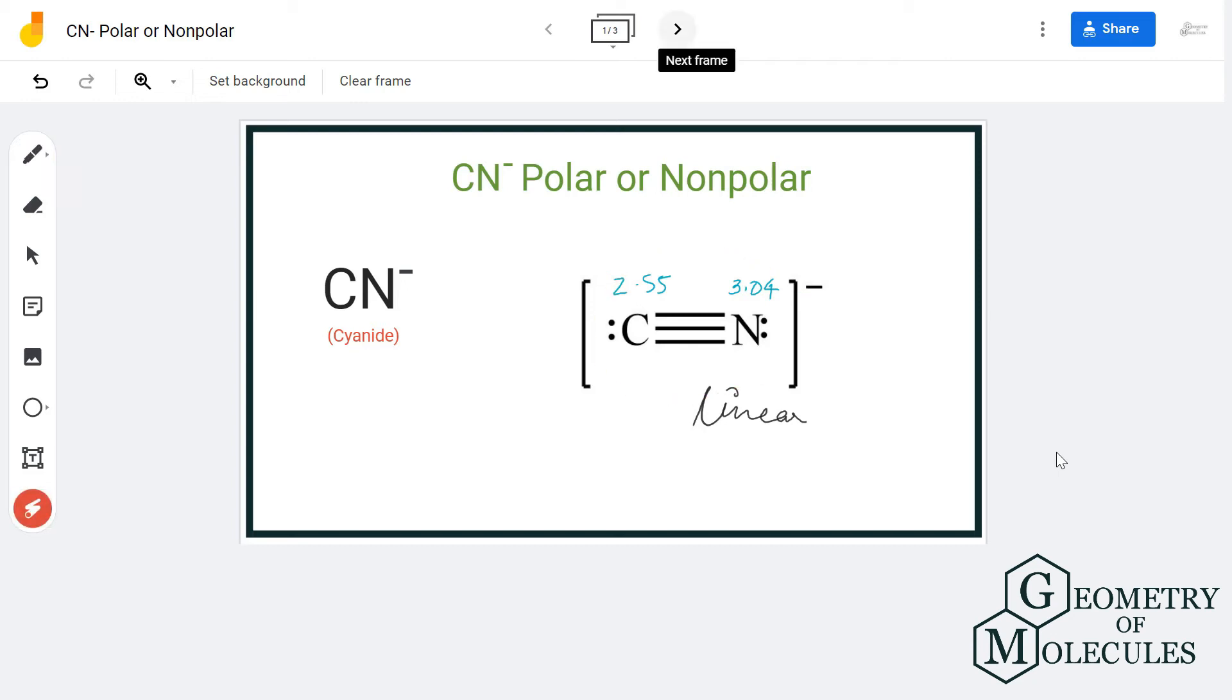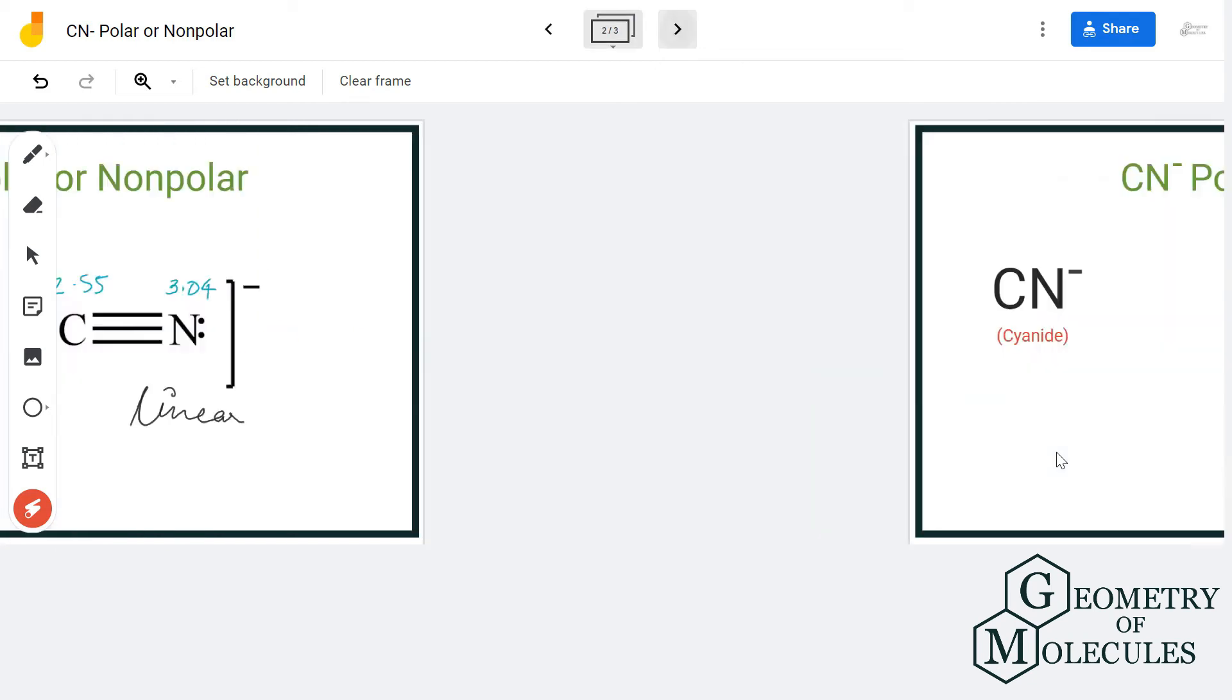So the triple bonds formed between carbon and nitrogen are polar, hence there is polarity in cyanide ion.